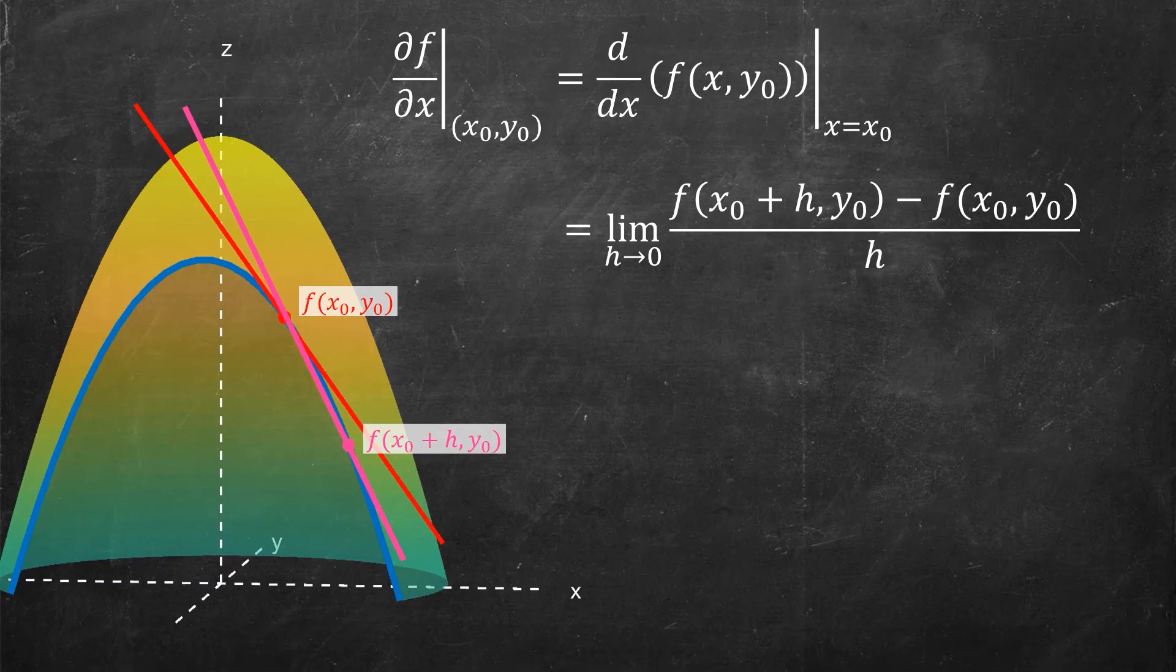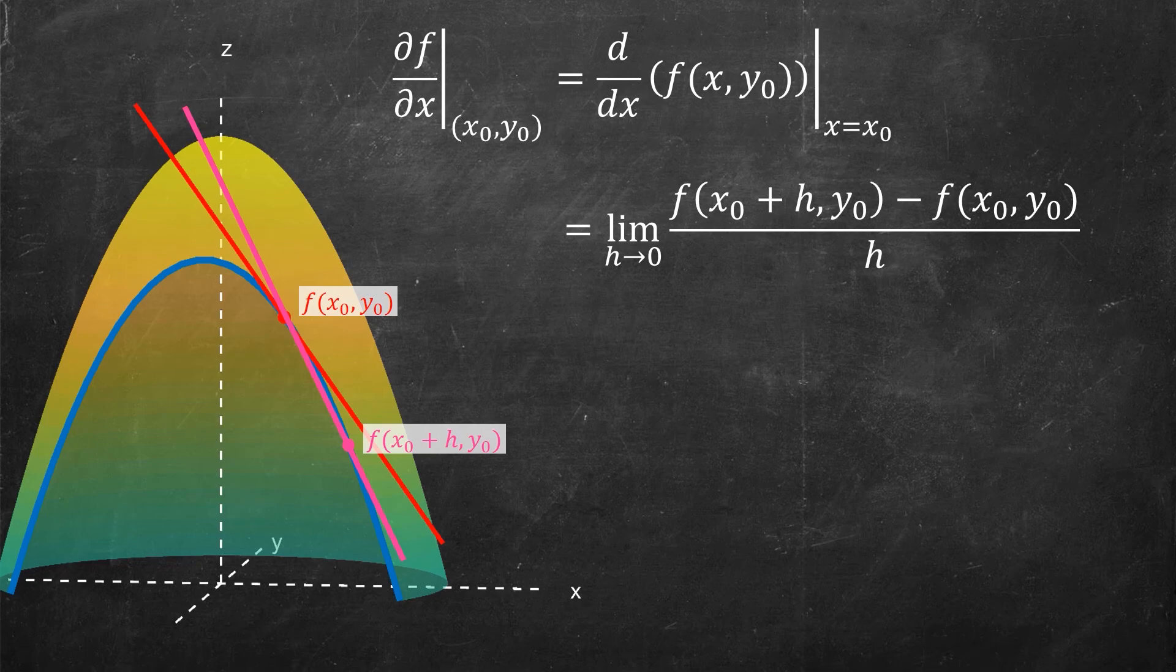And the change in the y values, the rise, is f(x₀ + h, y₀) minus f(x₀, y₀). That's the change in the output values and the f values. And then the change in the input values, you went from x₀ to x₀ + h, so you divide it out by h. So this is our formal definition of the partial derivative of f with respect to x in terms of limits.